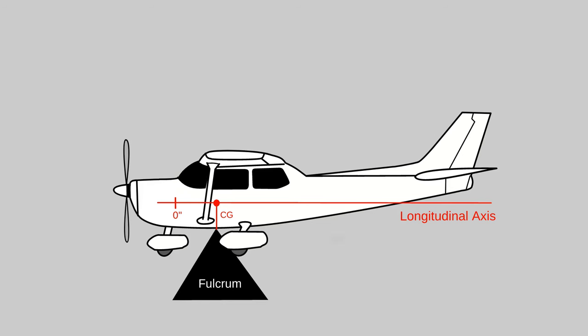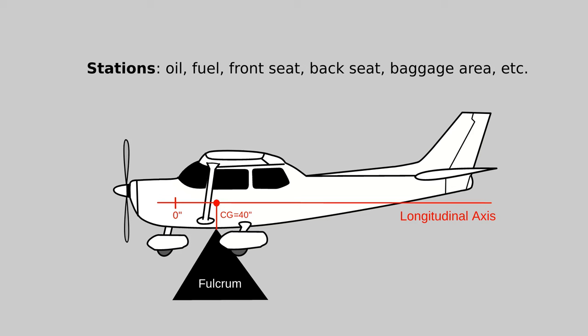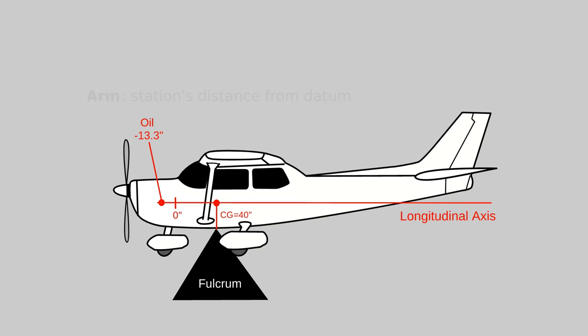Typically, the empty CG of a Cessna 172 is about 40 inches aft, or closer to the tail, than the datum. Each place you can put things in an airplane is called a station, and each station has a distance, often referred to as an arm, measured in inches. The oil is the only station that's in front of the datum, so it gets assigned an arm of negative 13.3. The two front seats are 37 inches behind the datum, so they get assigned an arm of positive 37.